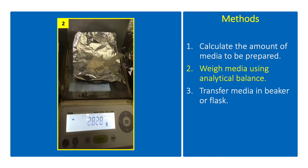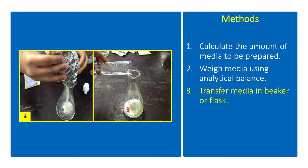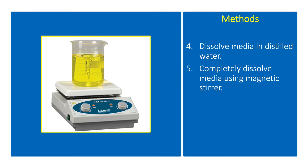Using aluminum foil or wax paper, weigh the amount of medium needed on an analytical balance. Avoid unnecessary exposure of the medium to the atmosphere because of its hygroscopic nature. Carefully transfer the powder into the flask or beaker. Pour the required volume of distilled water, then use a magnetic stirrer to dissolve the media completely.